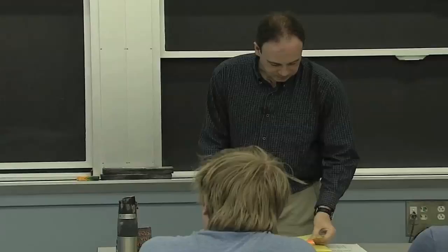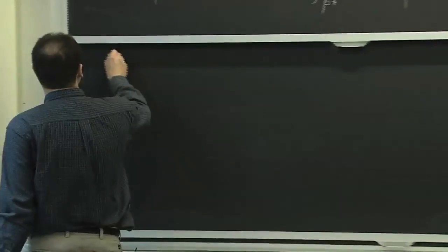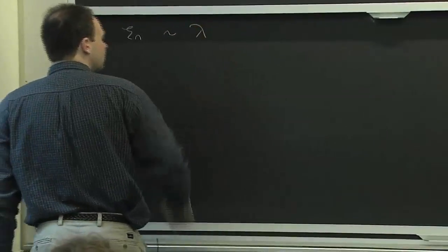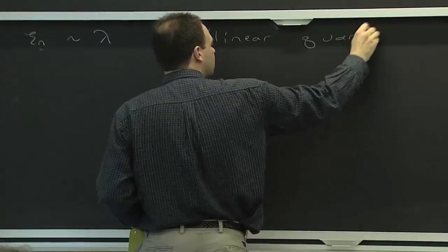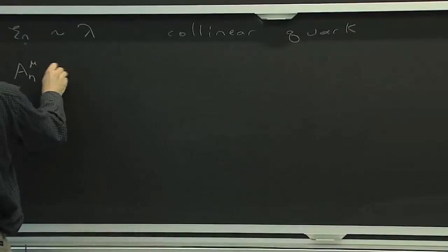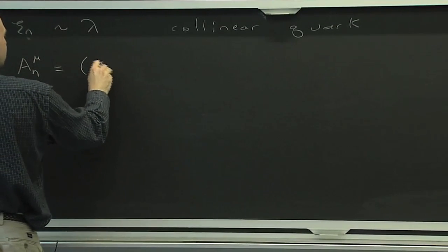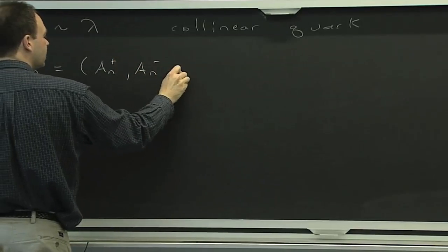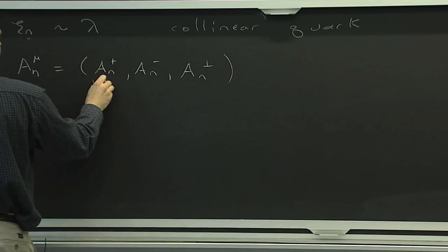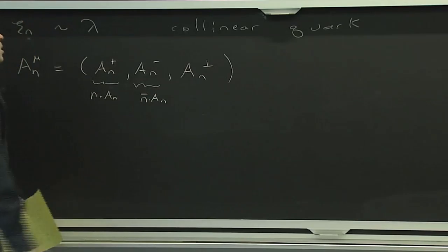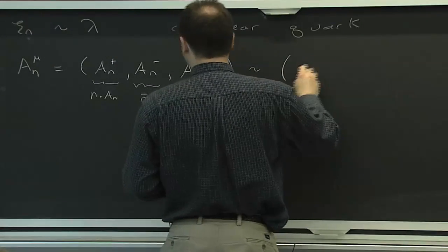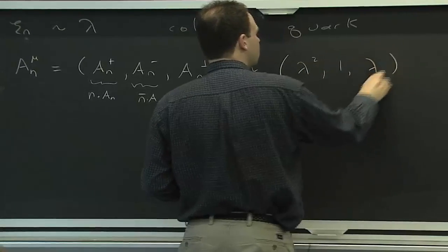We were also talking a little bit about fields last time. One thing I derived was that the collinear field has a power counting that makes it scale like lambda. That's the collinear quark. And at the end of lecture we also derived a formula for the collinear gluons. If we write down components of the collinear gluon — plus, minus, and perp — we recall that plus means n dot A, and minus means n-bar dot A.